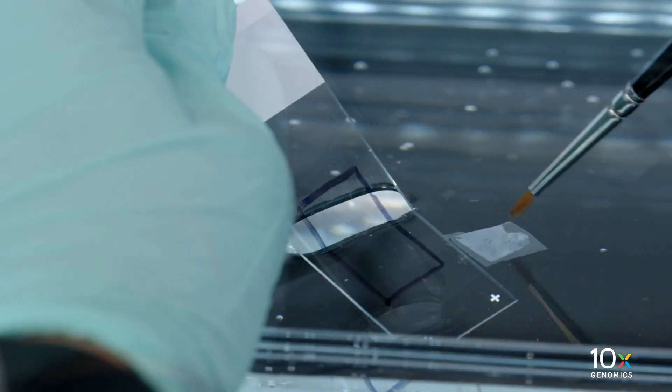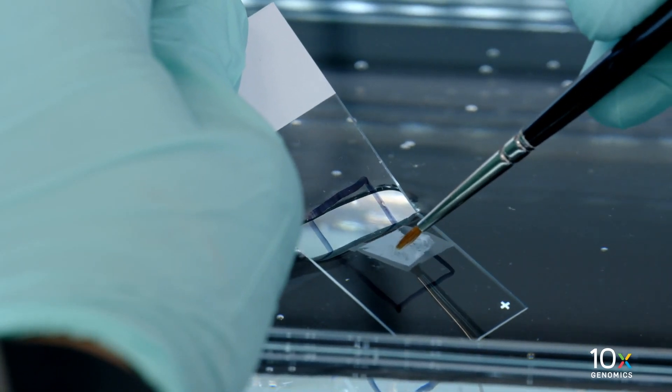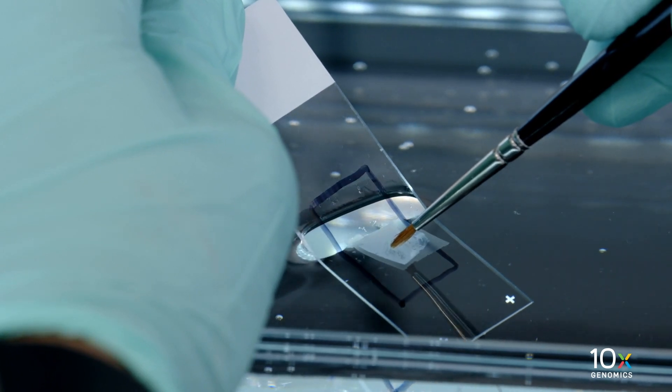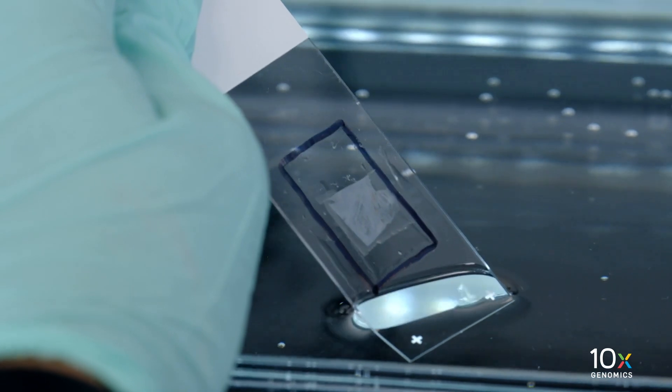You can also trace the allowable area on a plain glass slide to help with tissue placement. Maneuver the section to the traced allowable area and pull the blank slide up and out of the water.